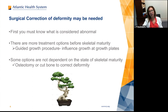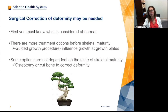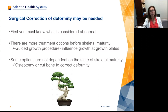Surgical correction of deformity may be needed. First, you have to know what's considered abnormal. There are more treatment options before skeletal maturity — don't wait until the child is full-grown. We have something called guided growth, a procedure where you can influence the growth plate to make it grow the way you want, like a bonsai tree. We can make children straighten out as they grow, but we need time remaining for growth. Other options not dependent on skeletal maturity include cutting the bone, like an osteotomy — a much more involved procedure with more healing time and potential complications.